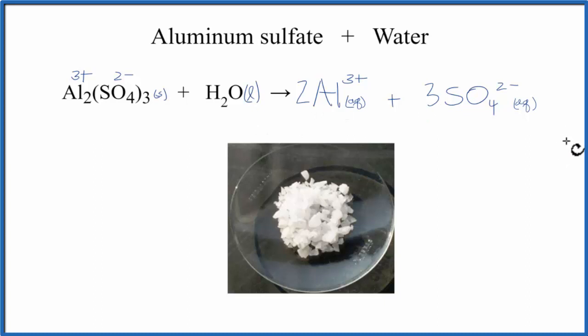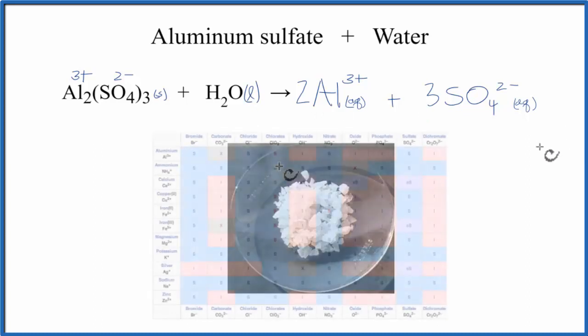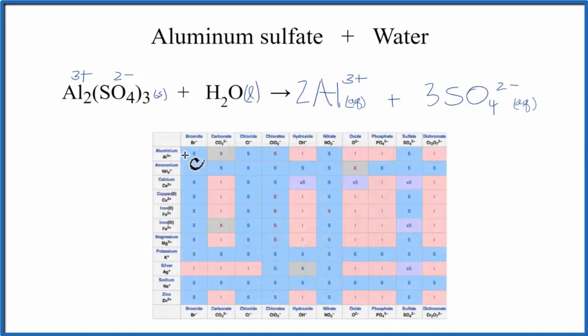But we should check a solubility table, see if that really happens. So we have this solubility table here. The positive ions are down on this side, so we go down, and there's aluminum right at the top. And then the negative ions are across the top. We're looking for the sulfate ion, and it's right over here. Here's the sulfate. So we go across, and we see that there's an S. That means it's soluble in water. So this actually does happen.